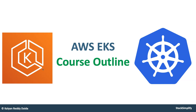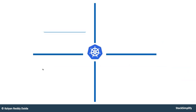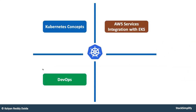This outline is going to be very detailed because the course is also a very long course which hits close to 20 hours. We'll see what all concepts we are going to cover. We have divided the topics into four major sections: Kubernetes concepts, AWS services integration with EKS — what all AWS services we can use in relation with Elastic Kubernetes Service — DevOps concepts, and microservices concepts.